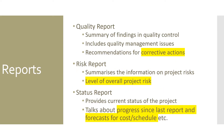The first type of report is a quality report, which talks about the summary of findings in quality control. There are two kinds: quality assurance, which talks more about processes and precision, and quality control, which talks about findings, testing, number of defects, and test cases executed. The quality report may also include recommendations for corrective actions in terms of product, process, and project performance.